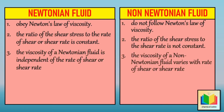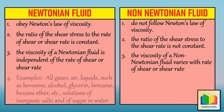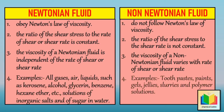Examples of Newtonian fluids are all gases, air, and liquids such as kerosene, alcohol, glycerine, benzene, hexane, ether, etc., as well as solutions of inorganic salts and sugar in water. Examples of non-Newtonian fluids are toothpaste, paints, gels, jellies, slurries, and polymer solutions.